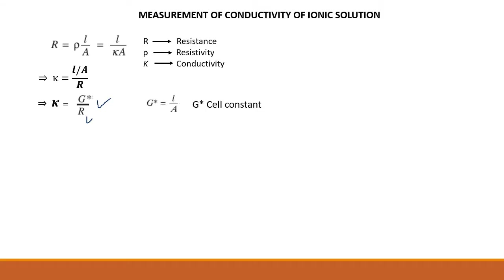The cell constant z-star equals simply L divided by A. To find the cell constant value, we do not measure L and A directly because that ratio is not easily obtainable. So to find the cell constant value, we rely on a specific method — we use electrolysis, from which we can know the value of kappa and from that find the resistance.